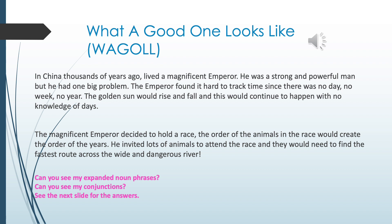In China thousands of years ago lived a magnificent emperor. He was a strong and powerful man but he had one big problem. The emperor found it hard to track time since there was no day, no week, no year. The golden sun would rise and fall and this would continue to happen with no knowledge of days. The magnificent emperor decided to hold a race. The order of the animals in the race would create the order of the years. He invited lots of animals to attend the race and they would need to find the fastest route across the wide and dangerous river.